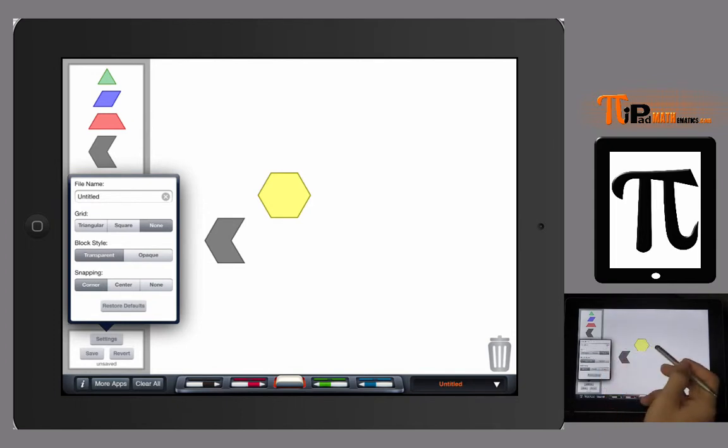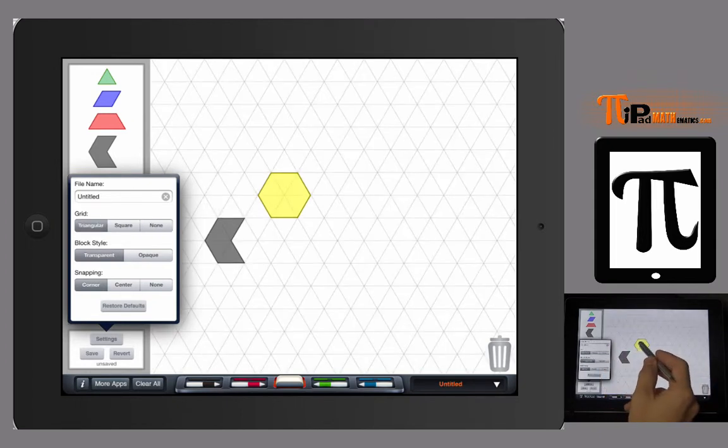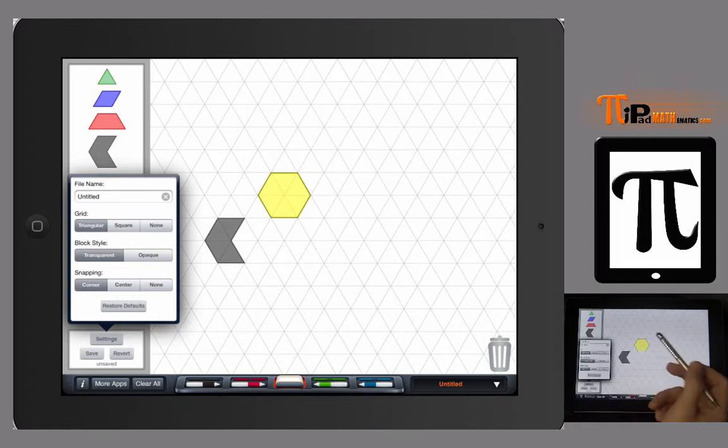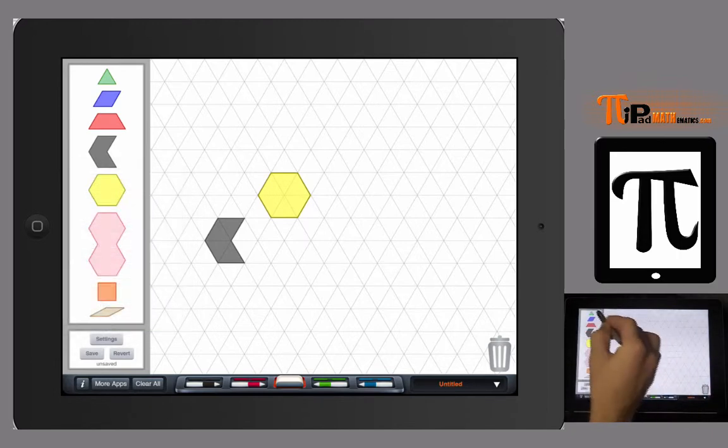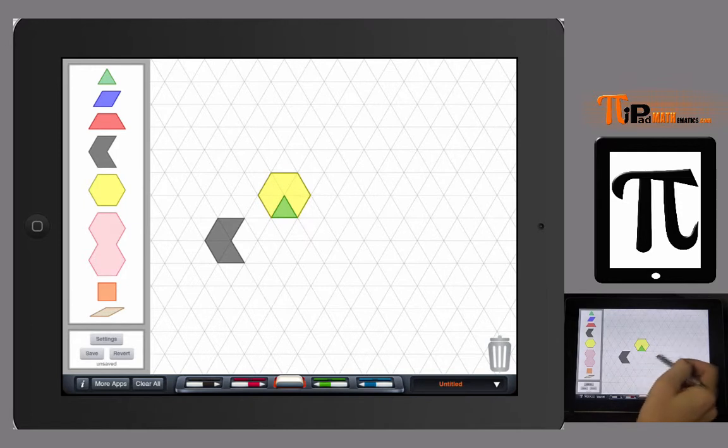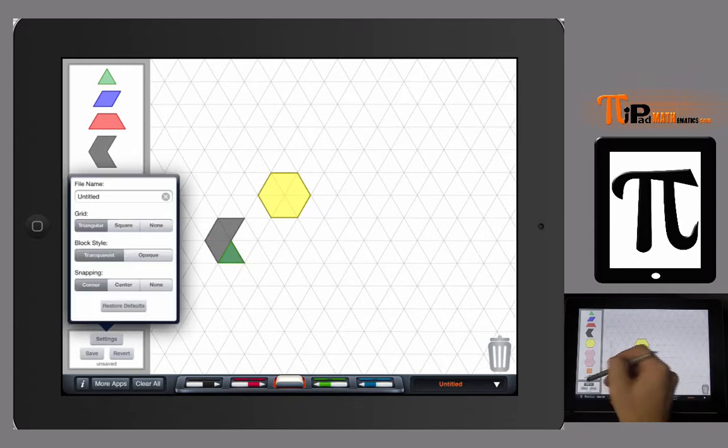However, if you're using the triangular grid, you can automatically see that six triangles make up the whole hexagon, meaning that one green triangle is one-sixth of the yellow hexagon and one-fourth of this black shape here.